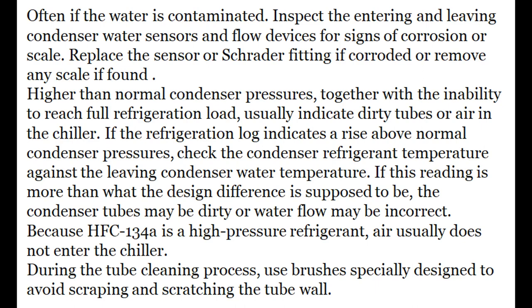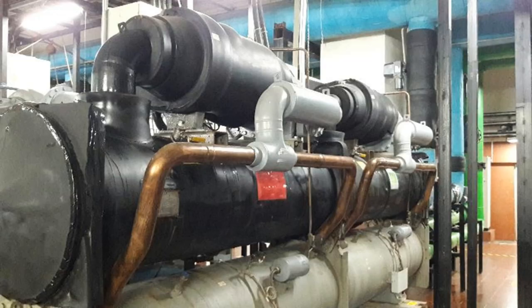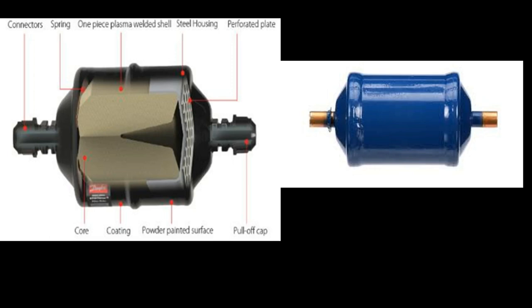Most refrigeration systems require mufflers to reduce noise due to gas pulsations in compressor suction and discharge lines. The muffler prevents hot gas pulsations from carrying noise and vibration through the system. Noise and vibration that is not dampened may actually increase after leaving the compressor, potentially damaging system components and pipelines. A filter dryer in a refrigeration or air conditioning system has two essential functions: one, to absorb system contaminants such as water which can create acids; and two, to provide physical filtration.